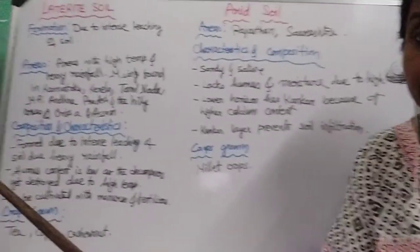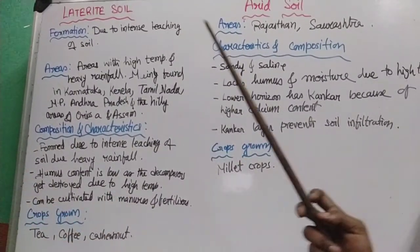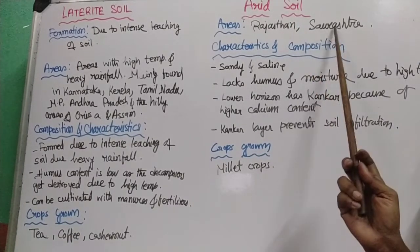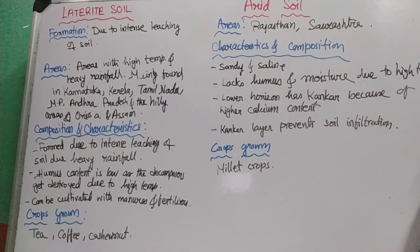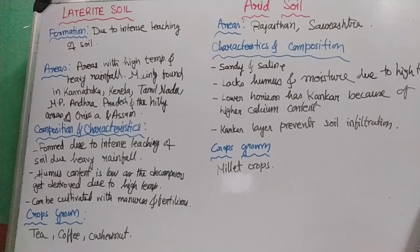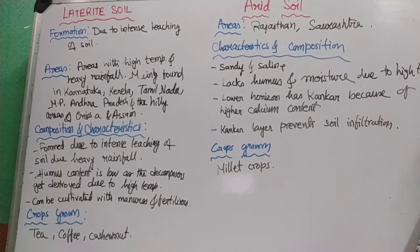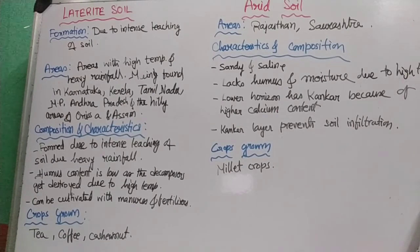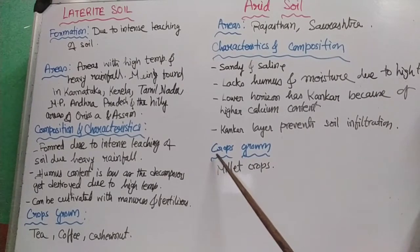Arid soil is found in Rajasthan and Saurashtra. It is sandy and solid, and lacks humus and moisture due to high temperatures. In the lower horizon of the substrate, you find Kankar nodules because of high calcium content, and this Kankar layer prevents the infiltration of rainwater into the deeper layers of the soil. Crops grown in arid soil are millet crops — Jowar, Bajra, and Ragi.